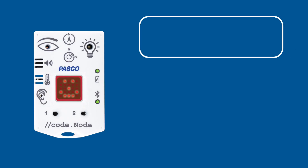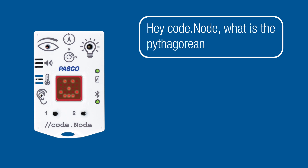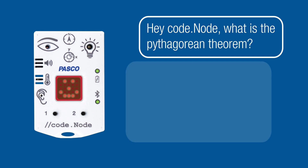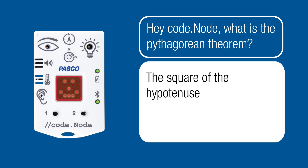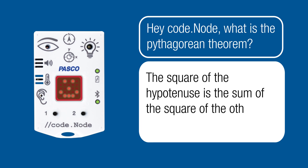Hey Codenode, what is the Pythagorean theorem? The square of the hypotenuse is the sum of the square of the other two sides, also known as a squared plus b squared equals c squared.